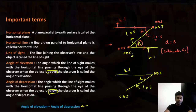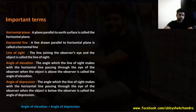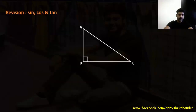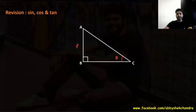We are going to use these concepts and solve questions. Let's quickly revise sine, cos, and tan. In a right-angle triangle ABC, taking angle theta — with respect to theta, the side opposite to it is the perpendicular, the adjacent side is the base, and the longest side is the hypotenuse.